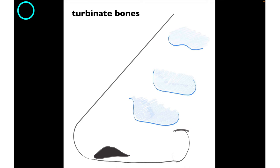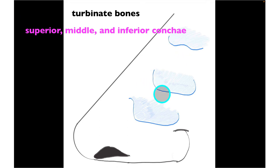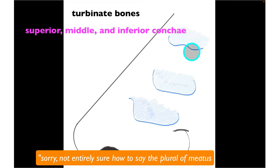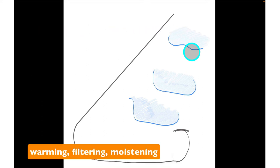Now let's talk about the nasal cavity. We see three turbinate bones, otherwise known as conchae — superior, middle, and inferior conchae. Between the conchae are narrow spaces known as meatuses, which allow air to pass. When air comes through the nares into the nasal cavity, it gets swirled around these turbinate bones, which is significant because it allows for the warming, moistening, and filtering of incoming air.